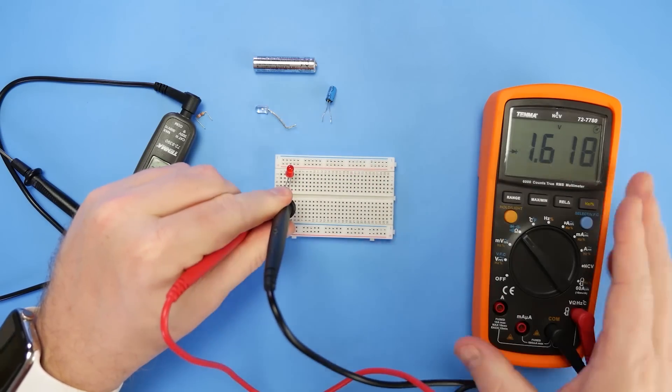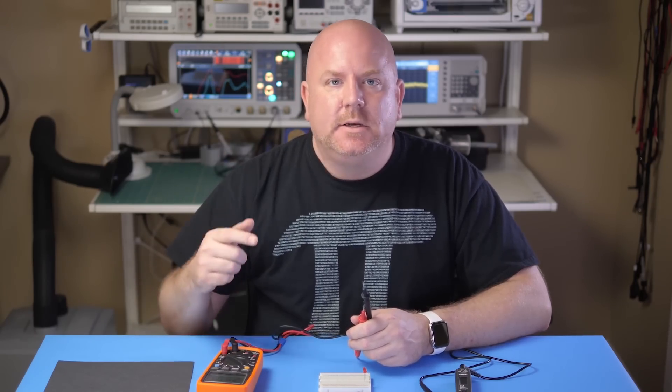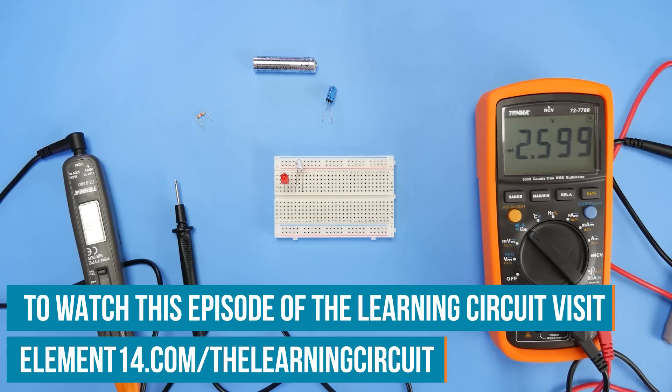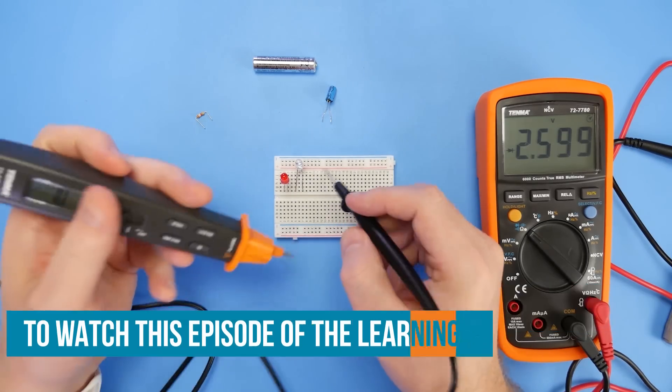Let's see what the big DMM says now. Okay, so it got about 1.6 volts as well. By the way, you could use this voltage measurement to calculate the current limiting resistor for the LED. That's something that Karen talked about in the Learning Circuits Ohm's Law episode. Now I want to show you something cool with a blue LED.